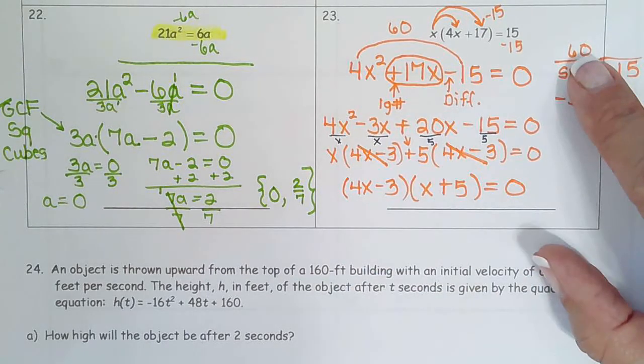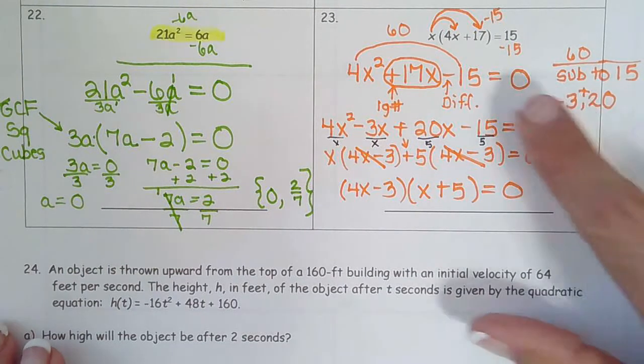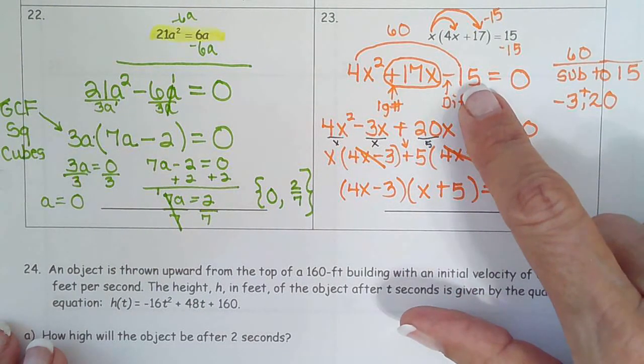so we did AC method, factors of 60, reading it backwards, that subtract,